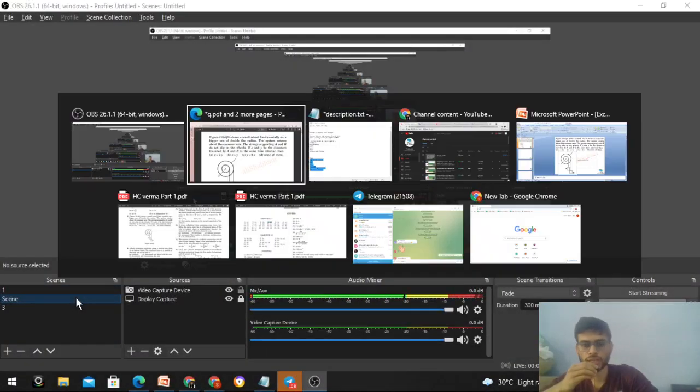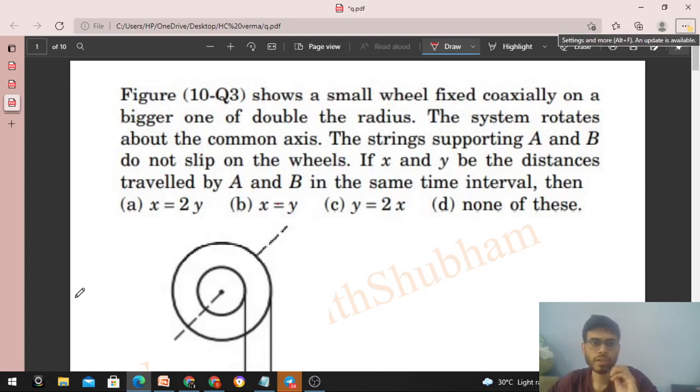Okay, hi everyone. Today let's discuss this interesting problem. The figure shows a small wheel fixed coaxially on a bigger one of double the radius. The system rotates about the common axis. The strings supporting A and B do not slip on the wheels. If x and y are the distances traveled by A and B in the same time interval, then find the relationship.